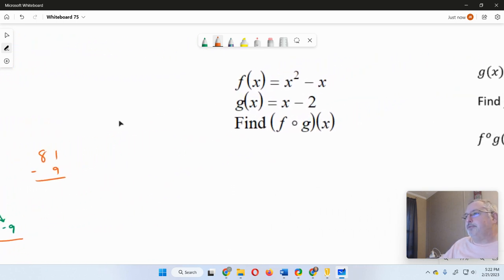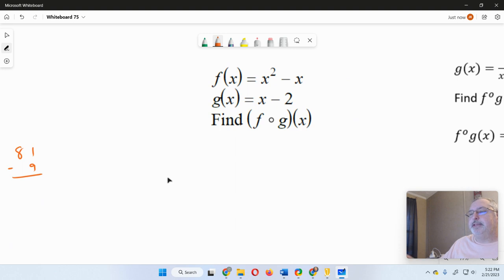So let's take a look at this one. This is f of g of x. So again, we're taking the f function, excuse me, the g function, and we're substituting it everywhere we see an x. So f of g of x is going to equal x squared minus x.